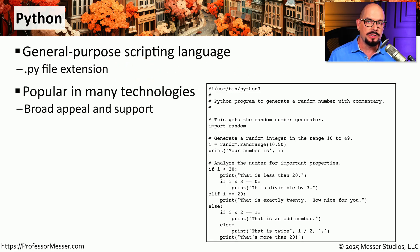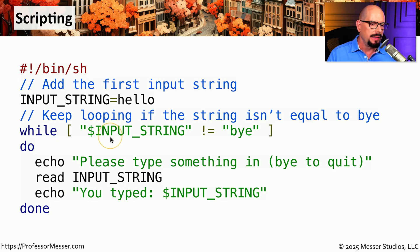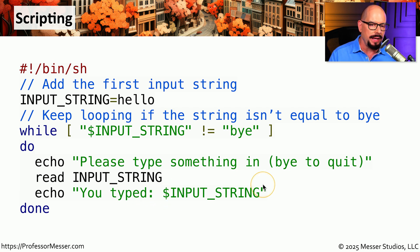Python has a great deal of support in the industry and has become very popular as a way to script across many different operating systems without having to change a lot of information inside the script. Here's a simple interactive shell script. It starts with the hash bang right at the beginning and runs as a shell script — you can see the /bin/sh. It has a variable called input string that is set to hello, and then there is a loop. This has an echo putting information on the screen that says please type something in or type bye to quit, then it waits for you to input information. When you hit enter, it echoes what you typed. It will continue through this loop until you put in the string bye, at which point it will say that you typed bye and then quit the loop.